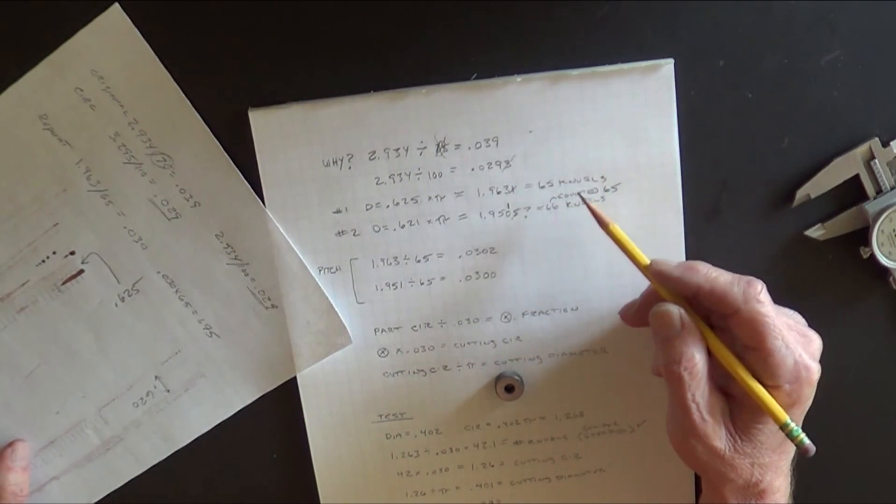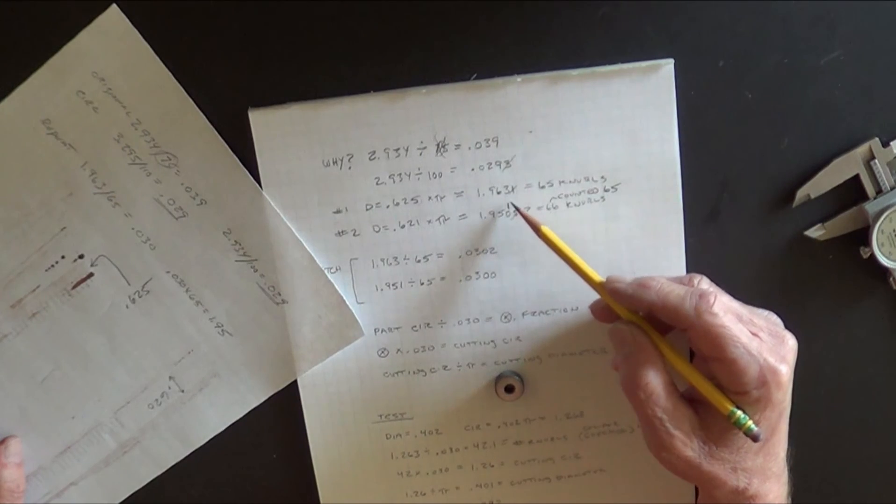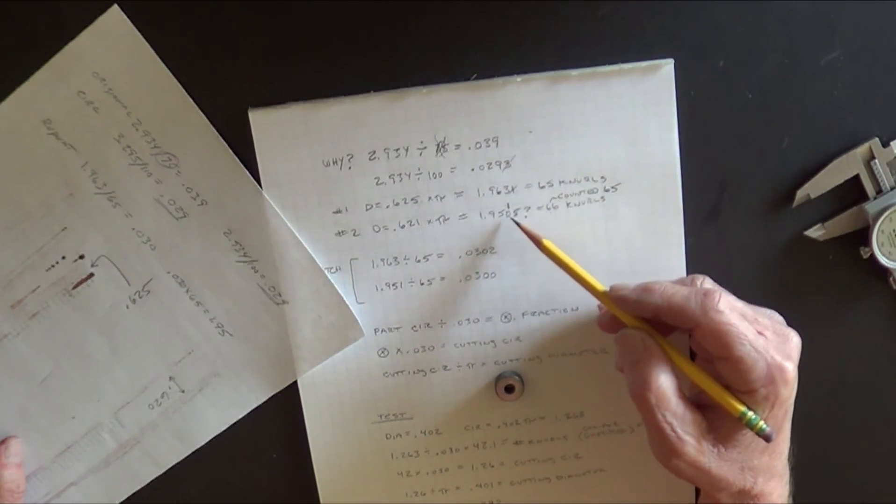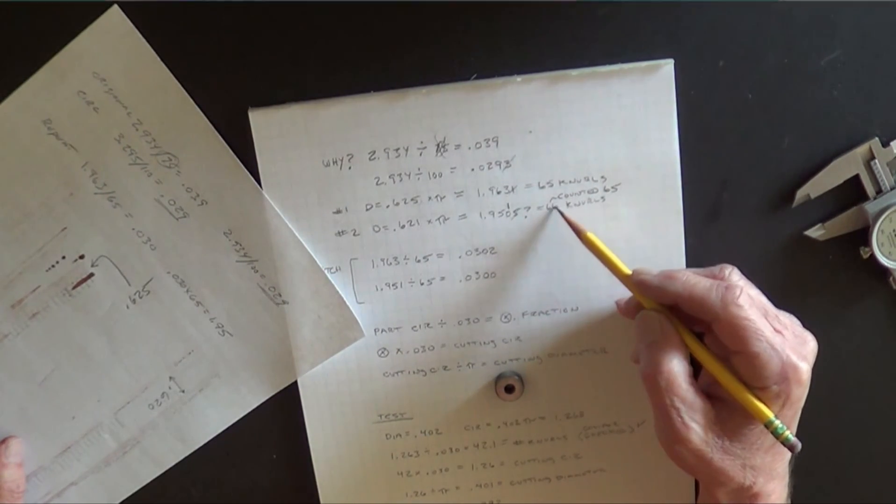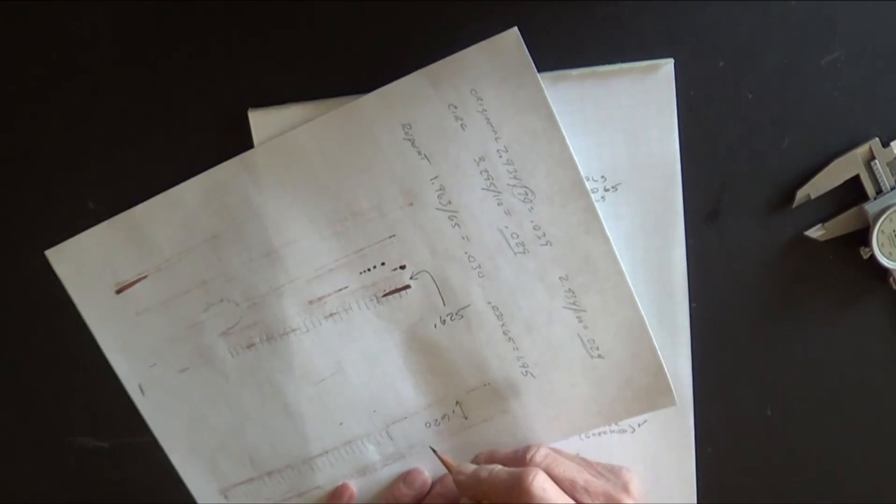So, one of them gave me 65, the other gave me 66. So, okay, and it was right on it, too. You dial in 1.951, and it lands on 66 knurls, on the 621 impression.